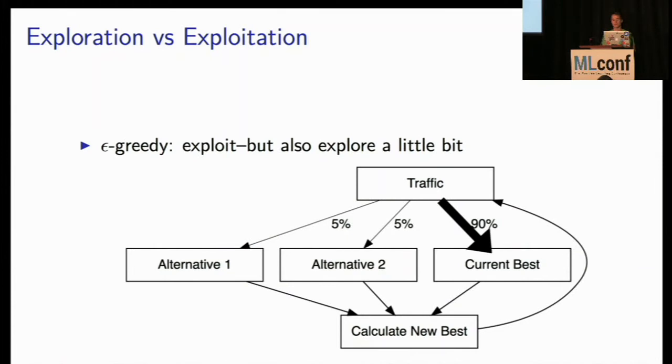Another way of kind of balancing this trade-off of exploration versus exploitation, or exploring versus using your best knowledge, is called Epsilon Greedy. So in this case, traffic comes in, you send most of your traffic to whatever you think is the current best version of your site or version of product recommendations, and then you send a small percentage to the alternatives to continue exploring so you don't get stuck. And so in this case, my Epsilon is 10%, and I spread that evenly across my various alternatives.